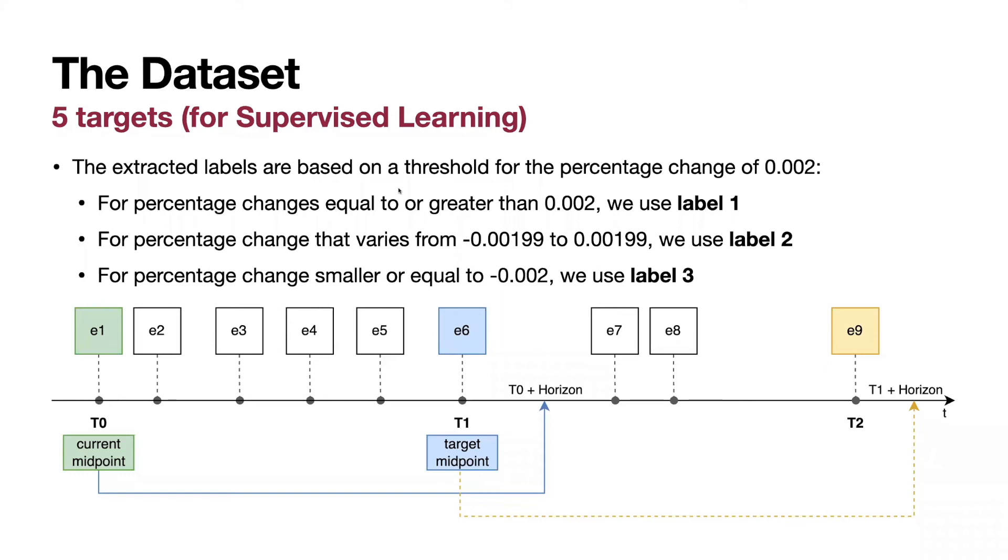It was recalculated to a categorical value. A threshold was selected of a percentage change of 0.002. Every change that is equal or greater than this threshold has value of 1. If the percentage changes in the range from minus 0.002 to plus 0.002, they use label number 2. It means flat. The price will not change at this midpoint. If the percentage is smaller or equal to minus this threshold, this is the other side of the movement of the price, label number 3. The price expectedly goes down.